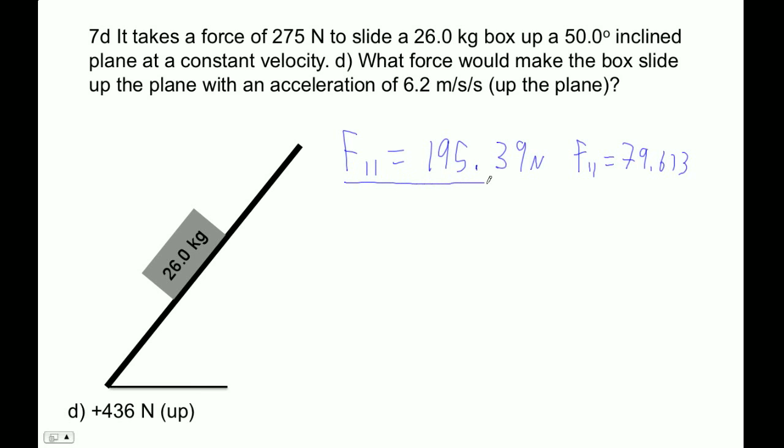Okay, I'm using answers that we got in part A here. We got that the parallel force, or the force of gravity, the component of gravity down the plane is 195.39 Newtons. And we got that in part A. And then we also figured out that the friction force, the kinetic friction force, is 79.613.